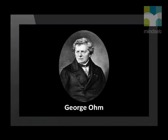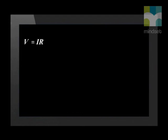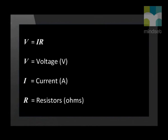The relationship between potential difference, current, and resistance is very helpful in designing a circuit or appliance. George Ohm was the first scientist to investigate this relationship. He formulated Ohm's law, which mathematically expressed is V equals I times R, where V is the voltage measured in volts, I is the current measured in amperes, and R is the resistance measured in ohms.